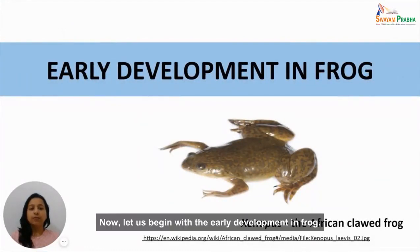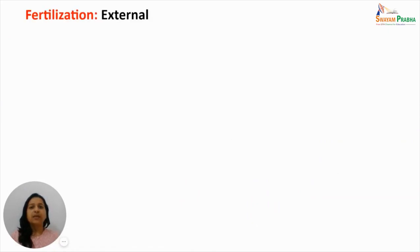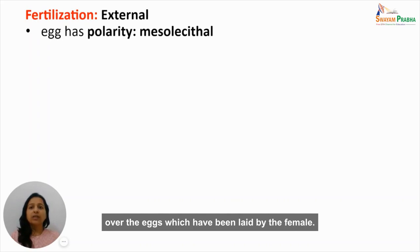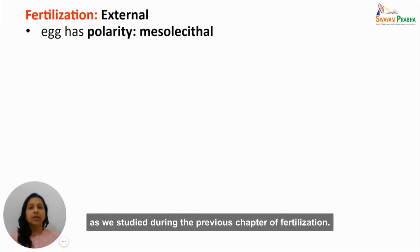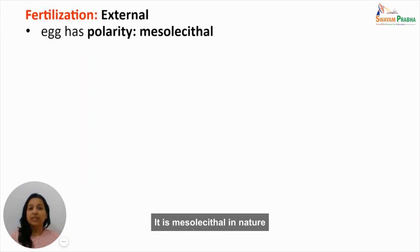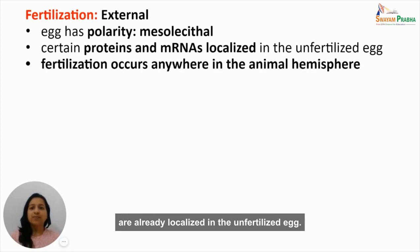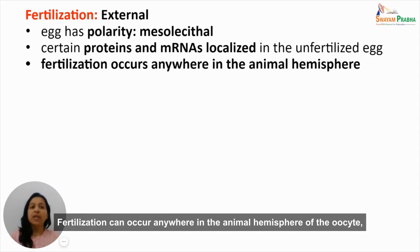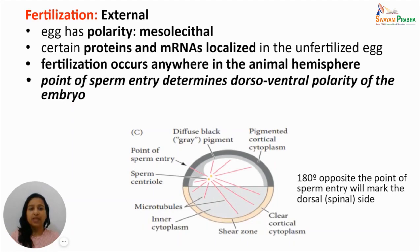Let us begin with early development in frog, taking Xenopus — the African clawed frog — as a type specimen. Fertilization in amphibians is generally external; it happens in water after the male lays sperm over the eggs laid by the female. The egg already has polarity when it is laid — it is mesolecithal in nature, meaning it contains a sufficient amount of yolk. Certain proteins and messenger RNAs are already localized in the unfertilized egg.